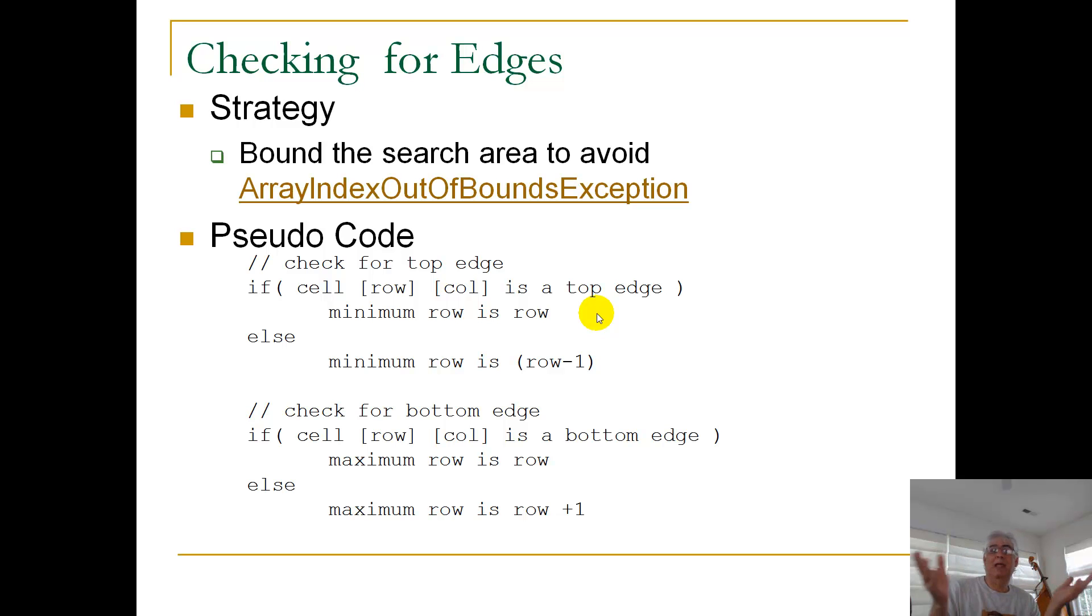Let me say that again. It means that the minimum row index where I can check for neighbors is simply the row I'm in.